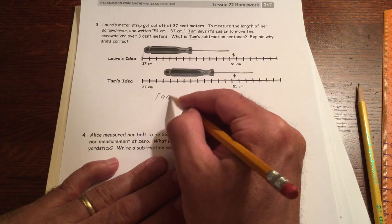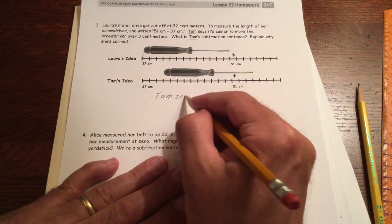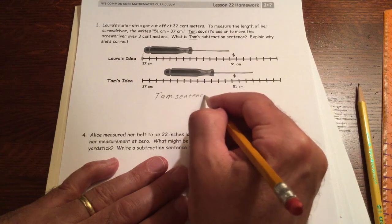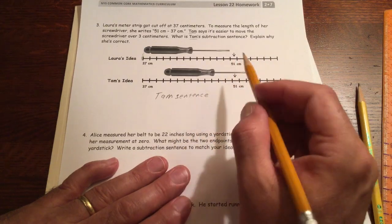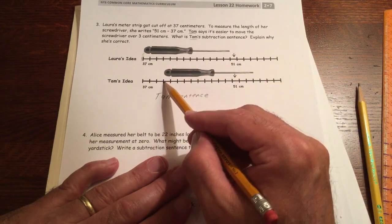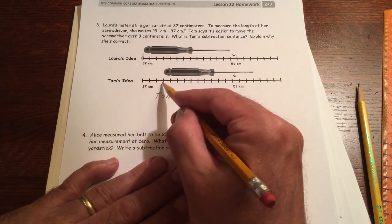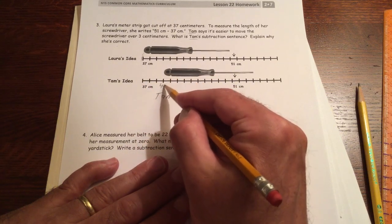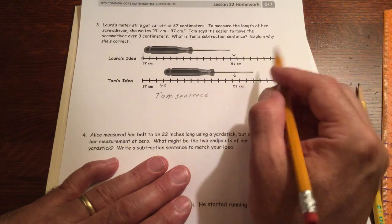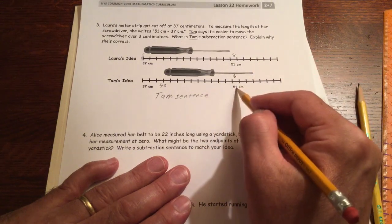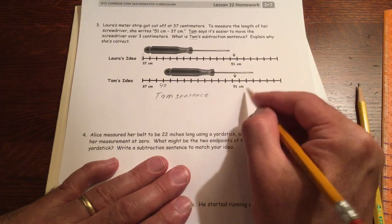So Tam is going to start here instead of being 51 minus 37. Tam's sentence is going to be 40. She wants to subtract 40. This is three more. So she's going to be subtracting 40, which is an easier number. And instead of starting at 51, she's going to start at 54.